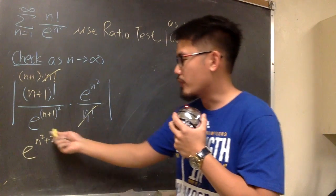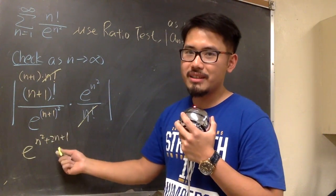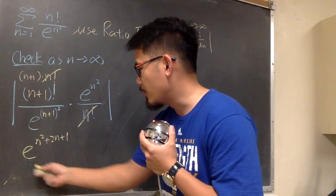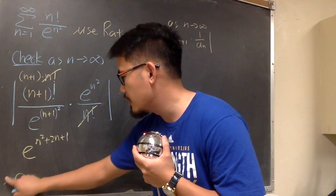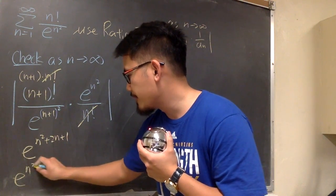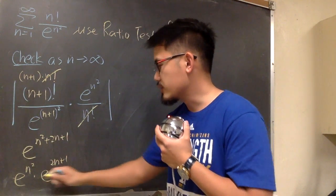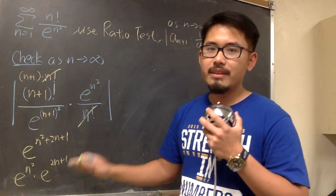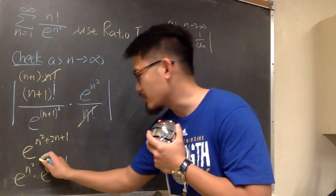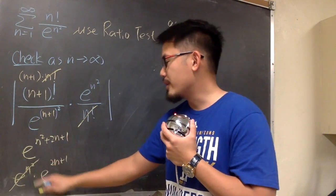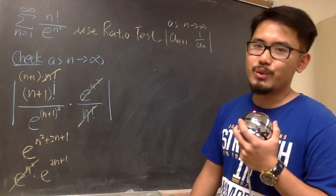And because of the rule of exponent, we can break this apart. I'm going to break this apart as e to the n² times e to the 2n+1. I just want to break this apart like this. And the reason I want to do this is so that e to the n² will cancel with that e to the n².